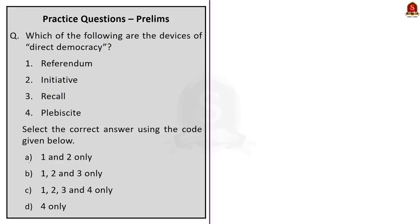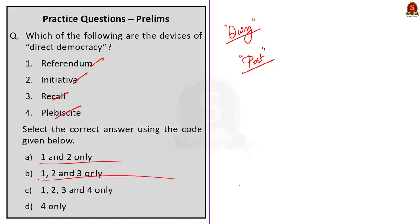The second question — which of the following are the devices of direct democracy: 1. Referendum, 2. Initiative, 3. Recall, 4. Plebiscite — is the quiz question for you. Try to attempt the question and post your answer in the comment section. It is a very easy question.